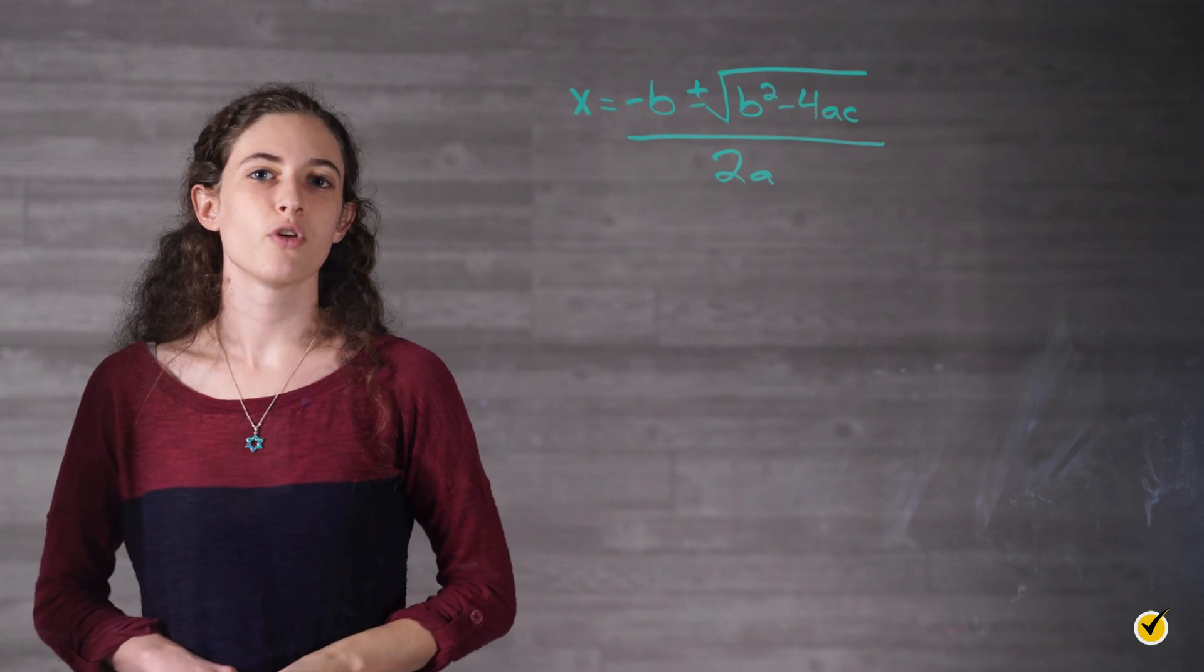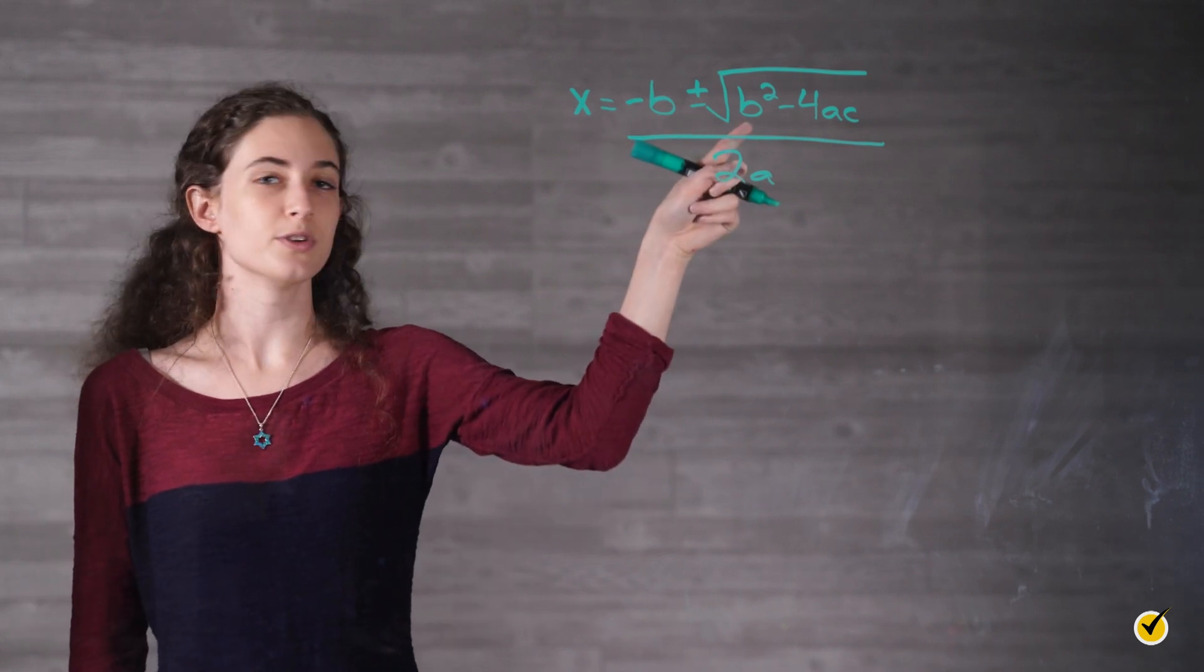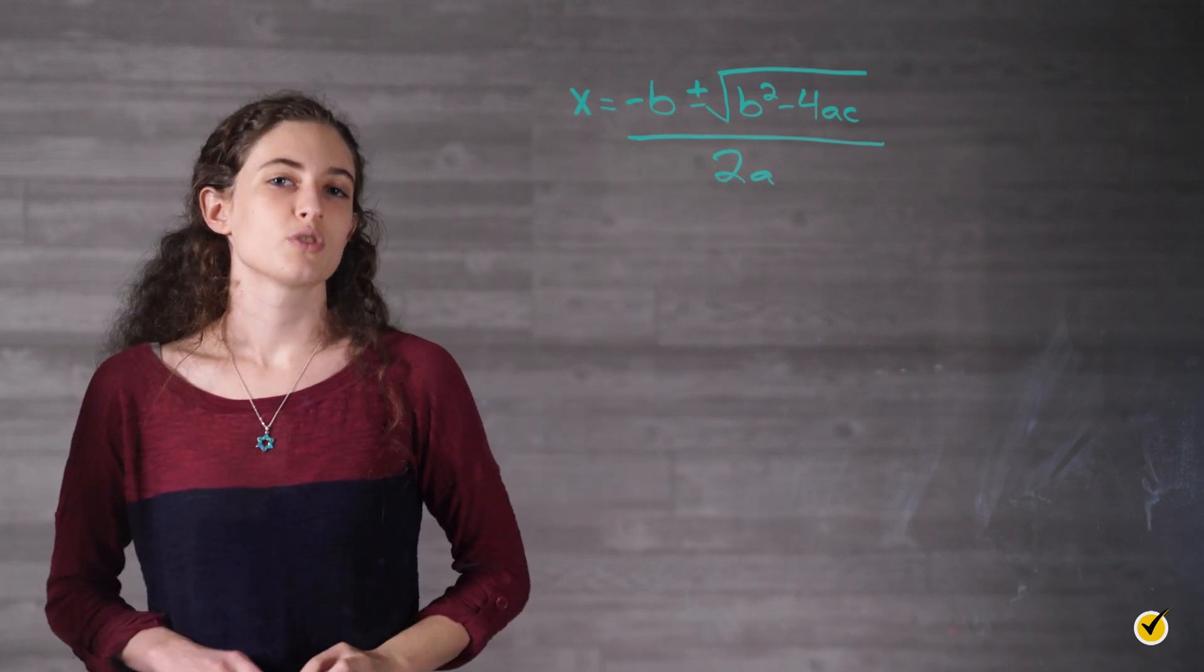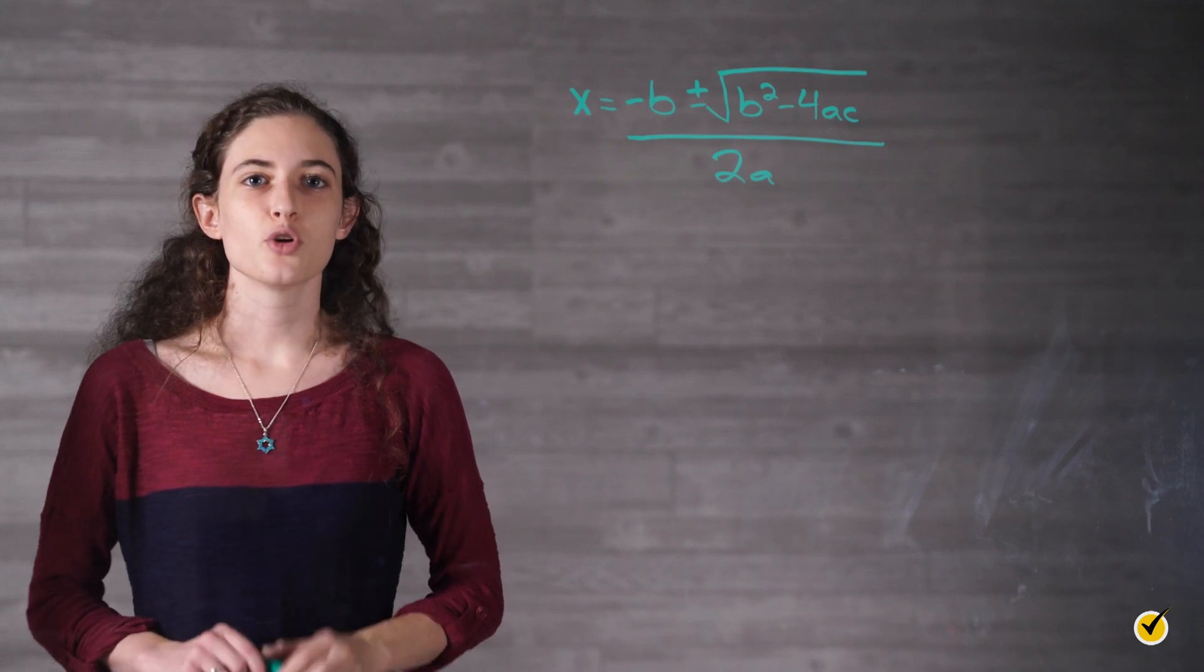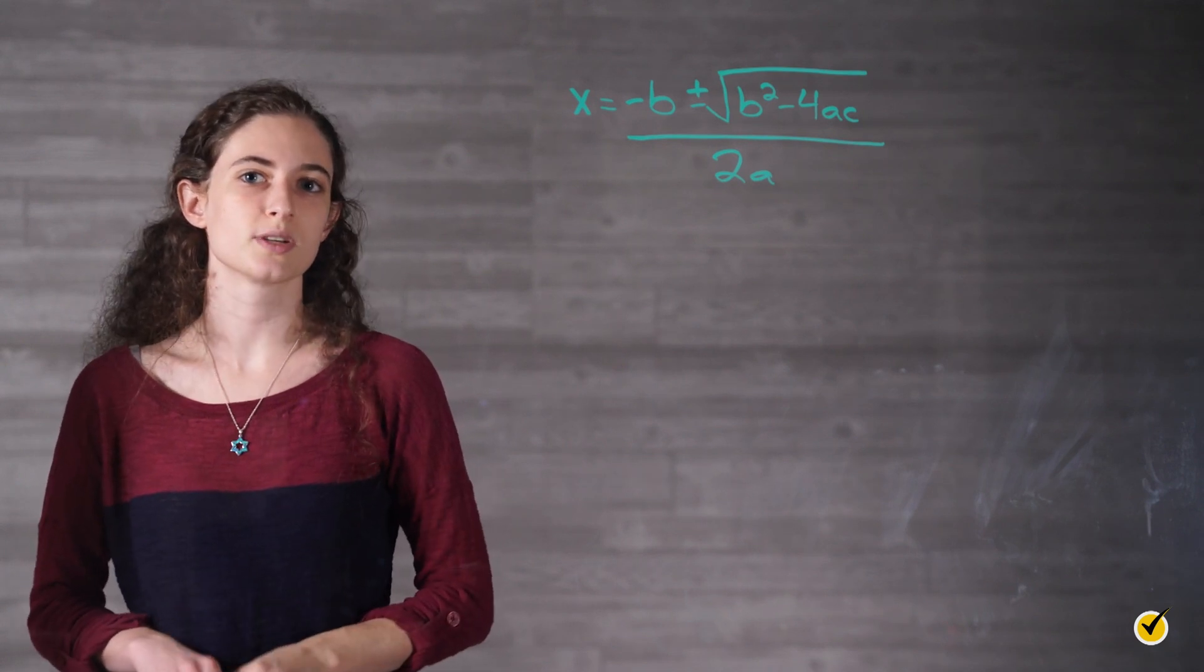The piece of the quadratic formula under the radical, the square root sign, is called the discriminant. Calculating its value helps us know how many solutions to expect.